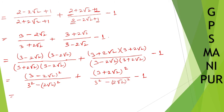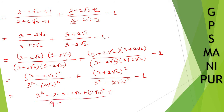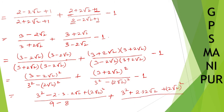Expanding the denominators: 3 squared is 9, and (2√2) squared — square and root cancel — gives 4, so 4 times 2 equals 8; denominator is 9 minus 8 equals 1. For the numerators, applying a squared minus 2ab plus b squared and a squared plus 2ab plus b squared respectively.